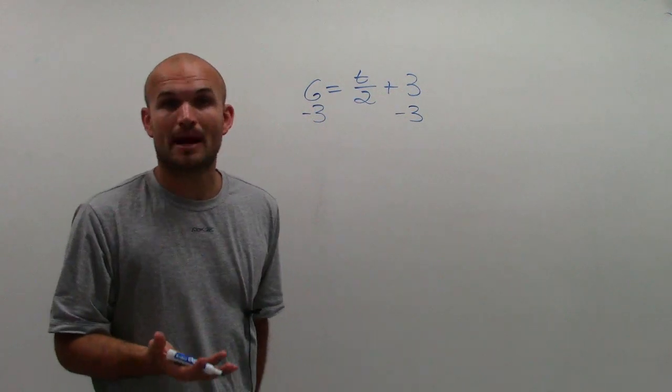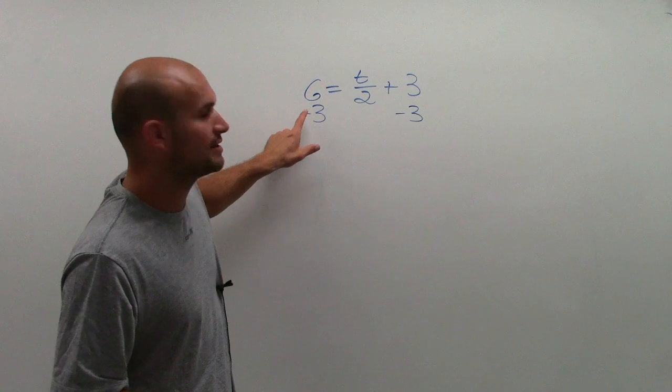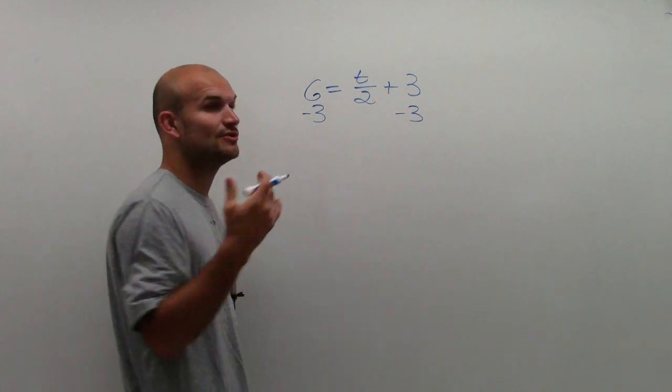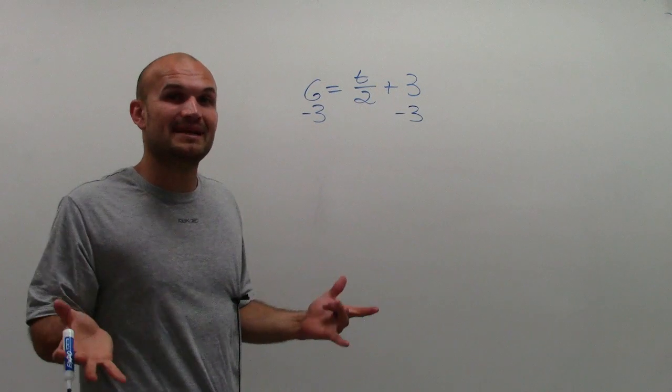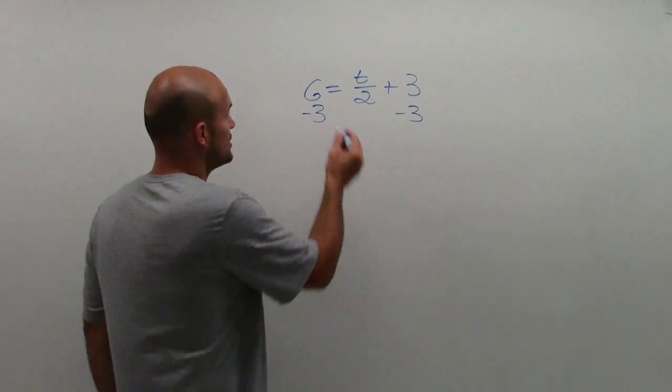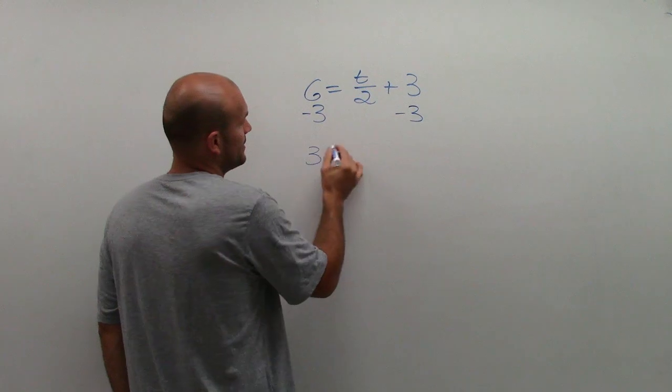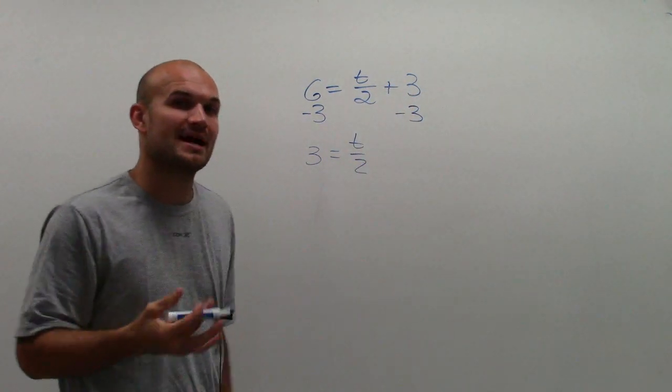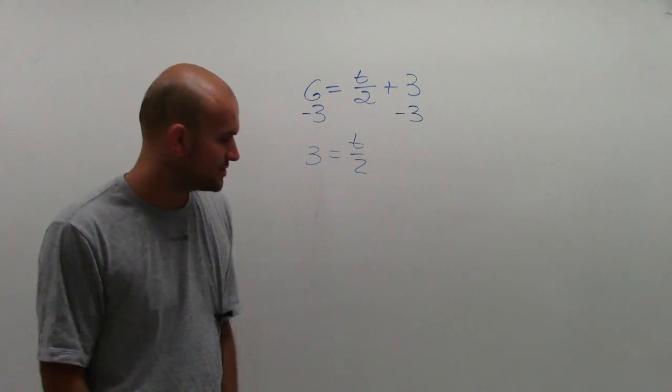Remember, we use the subtraction property of equality, meaning I'm going to subtract on the left side of the equation and the right side of the equal sign. And that's going to produce an equivalent equation, meaning the answer has not been changed. 6 minus 3 is 3 equals t divided by 2. And then positive 3 minus 3 is 0. 0 plus t over 2 is t over 2.